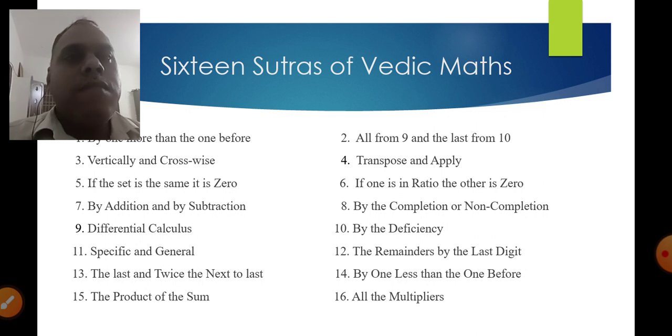Fifth, if the sum is the same it is zero; sixth, if one is in the ratio the other is zero; seventh, by addition and by subtraction.